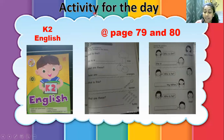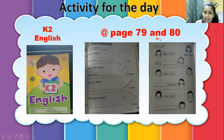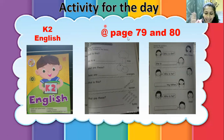We have come to the end of the topic. It's activity time for the day. Our activity is from the book K to English. Open to page 79 and 80. Complete your work and snap and send it to the teacher. Okay, children. Bye-bye.